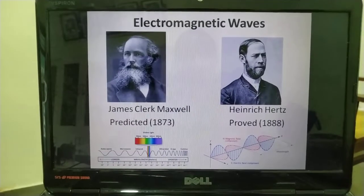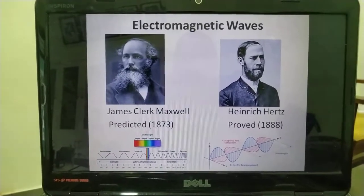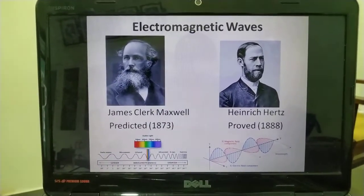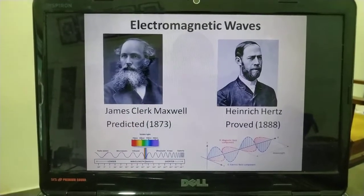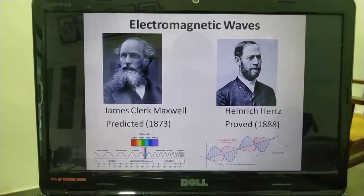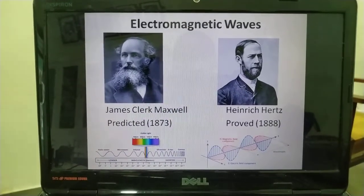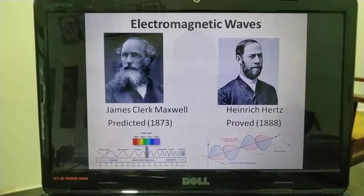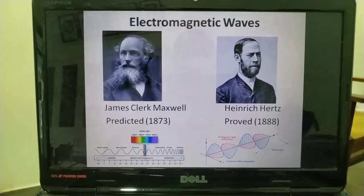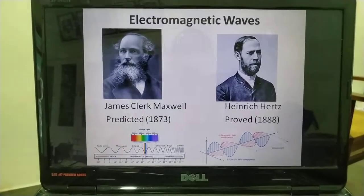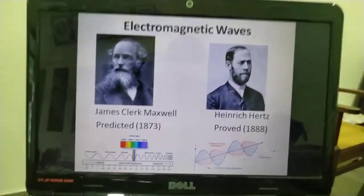Electromagnetic waves in existence proved in a classical experimental demonstration. Electromagnetic waves were predicted in 1873 by Maxwell after solving his equations, and it was experimentally proved by Heinrich Hertz in 1888.